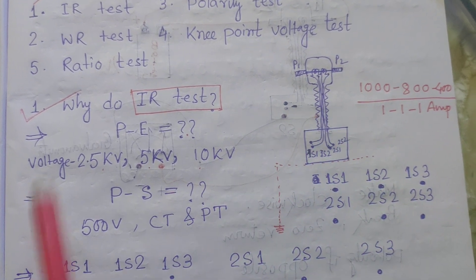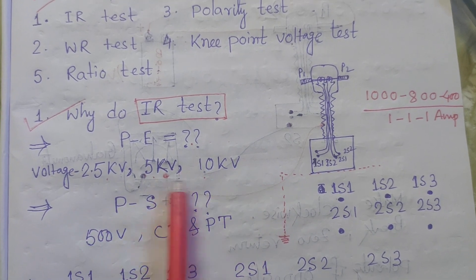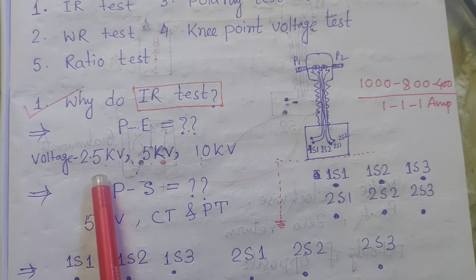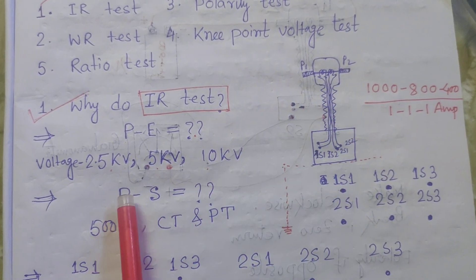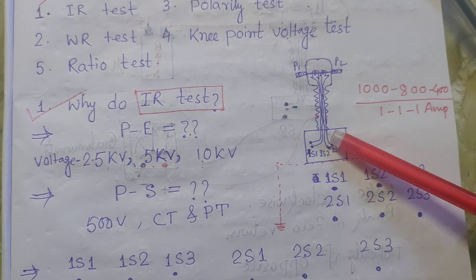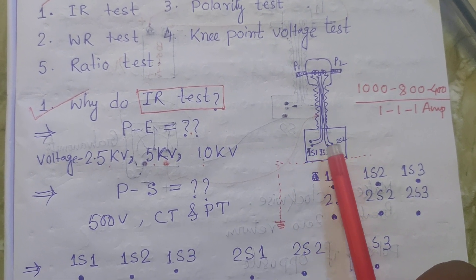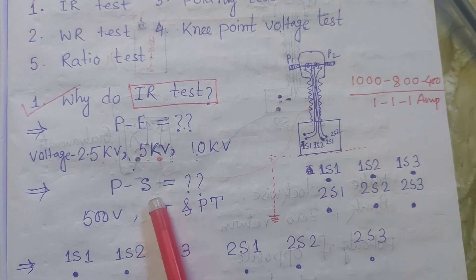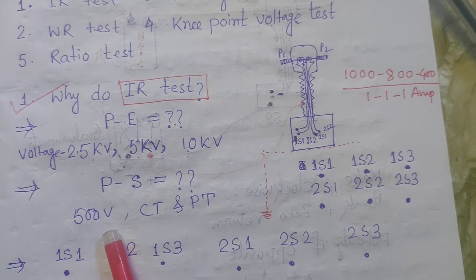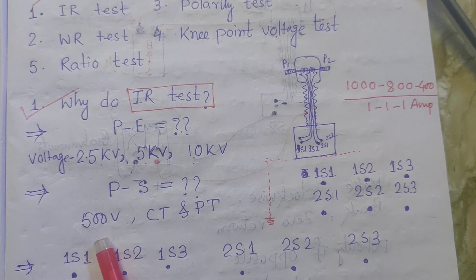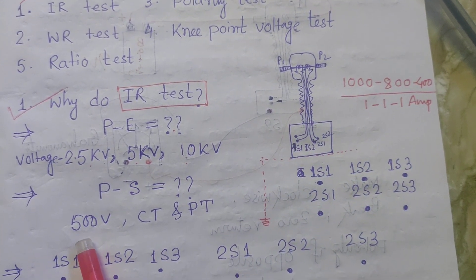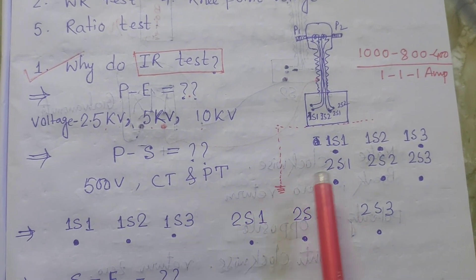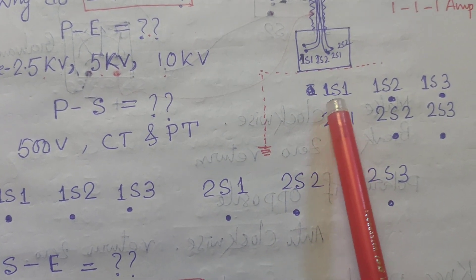Using a 2.5kV, 5kV, or 10kV megger depending on the voltage level, you can select different voltage knobs on the digital megger. For primary to secondary measurement - because the secondary core is low voltage, low current sensing material - you have to do the insulation test using a 500 volt megger. In the case of CT and PT, you have to perform insulation resistance measurement using a 500 volt megger. Then measure primary to secondary.